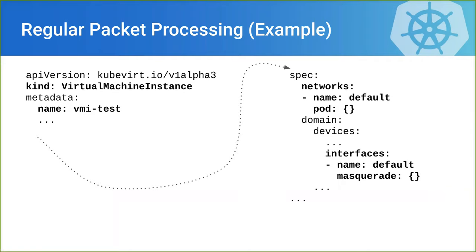From the API perspective, here is a truncated virtual machine instance definition. In the spec there is a networks list — we name our single network 'default.' In the interfaces list we specify that we want to mount this default network through a masquerade binding. If you completely omit the network section, you just get access to the default network automatically.